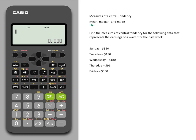You could also calculate mean and median simply by adding up and dividing by what you have, but I'm showing you how to use the actual auto-calculations. The first thing we need to do is enter our data.